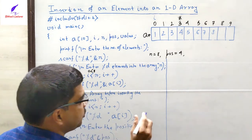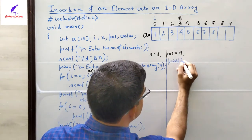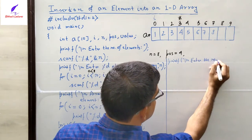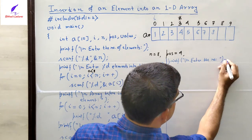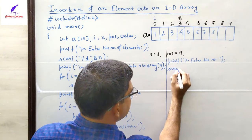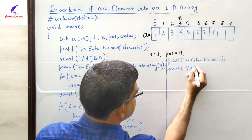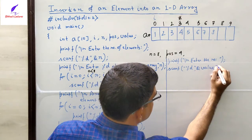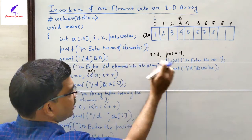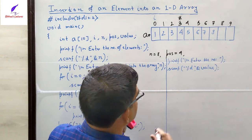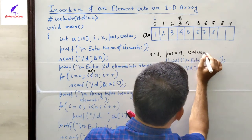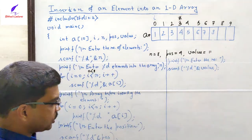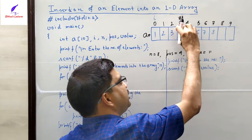After taking the position, we ask the user to enter the number they want to insert at that position. We call printf 'enter the number', then `scanf("%d", &value)` to scan it. Suppose the user wants to insert the value 11 at position 4, meaning 11 will be inserted at index 3.